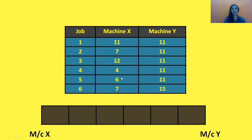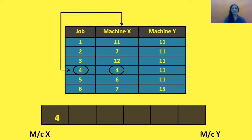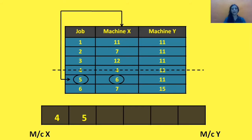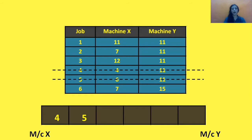In all these processing times, the minimum one is 4, which corresponds to job 4. So we are allocating job 4 on machine X, and at the side of machine X in the grid, we are writing 4, then cancelling out job 4. The next minimum processing time is 6, corresponding to job number 5. So we are allocating job 5 on machine X, and after 4 in the grid we write 5, then cancel job 5. The next minimum processing time is 7.